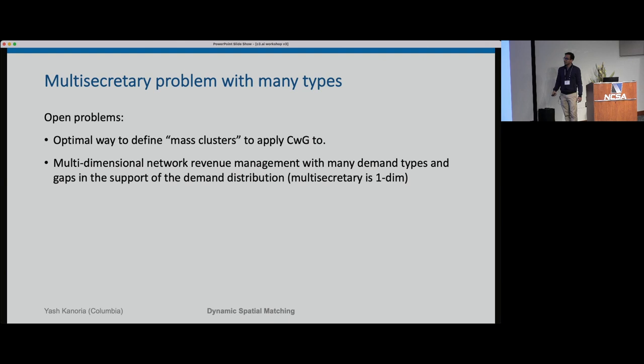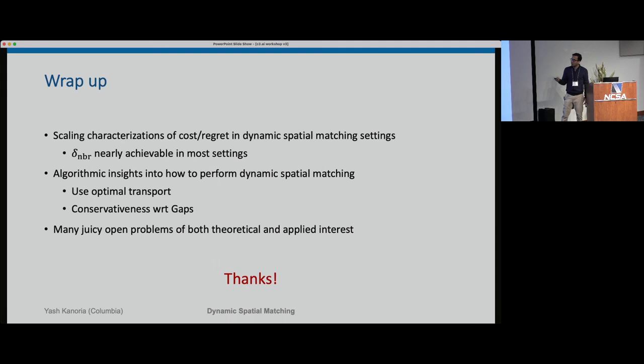Open problems include how to define the right clusters — which gaps should be used for conservativeness — and the multidimensional version which Akshit has been working on. Hopefully this has gotten some of you interested in this space. Thank you.